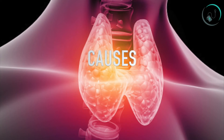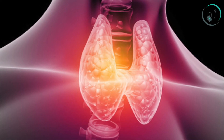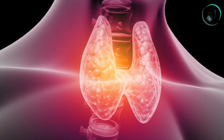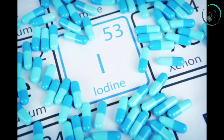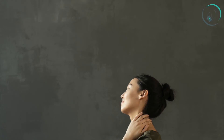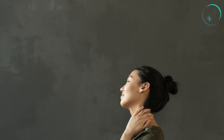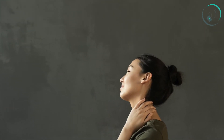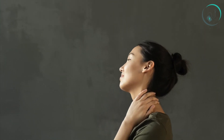Causes: Nutrient deficiency and autoimmune disease are the two major causes of this disease. Iodine is an important nutrient for thyroid functioning; its deficiency can cause hypothyroidism and goiter. Zinc is mandatory for the synthesis of thyroid hormones, and its deficiency results in hypothyroidism. Selenium converts T4 into T3. Hashimoto's disease is the most common autoimmune cause, where the gland gets attacked by the body, destroying its capacity to produce the hormone.